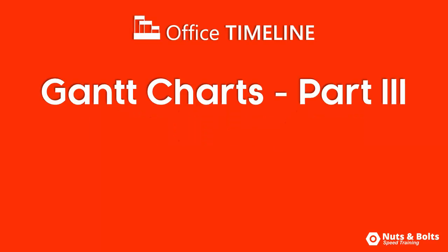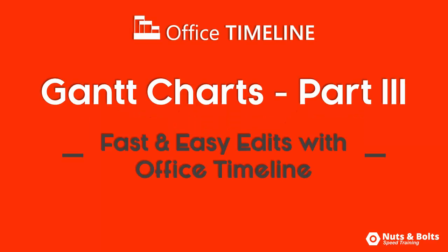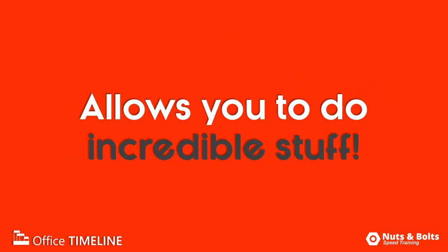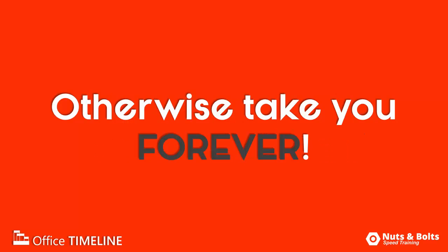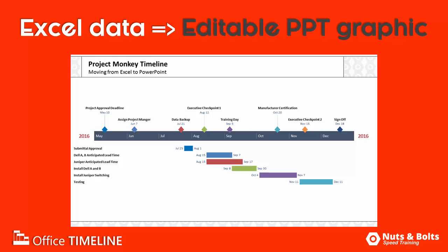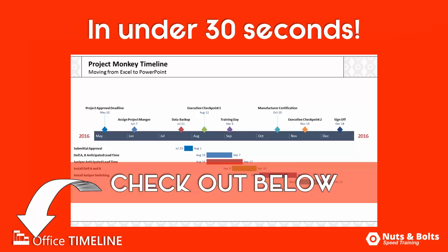Hey, this is Taylor from Nuts and Bold, with part 3 of this Gantt chart series — fast and easy edits you can make to your Gantt chart or timeline within the Office Timeline add-in, which allows you to do some pretty incredible things in seconds that would otherwise take you forever to pull off in PowerPoint. At this part in the series, I've turned my Excel data into a fully editable PowerPoint graphic in just about 30 seconds, which you can check out here if you missed it.